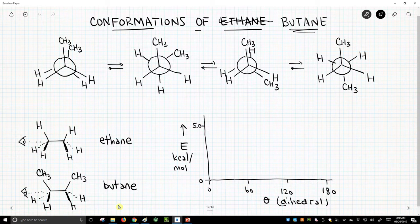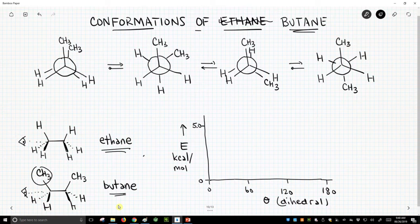We're looking at not ethane anymore. This is the sawhorse diagram of ethane, but we're looking at butane, and all we've done is put in methyl groups in place of these two hydrogens.